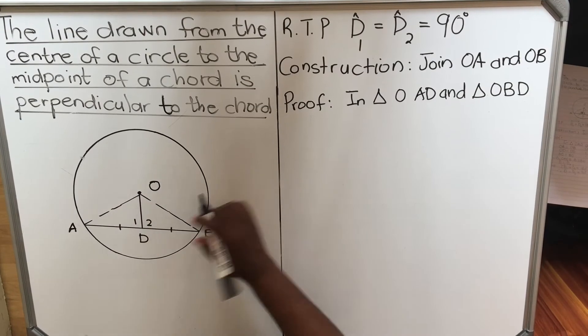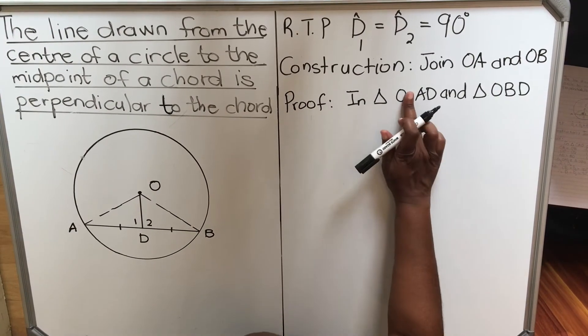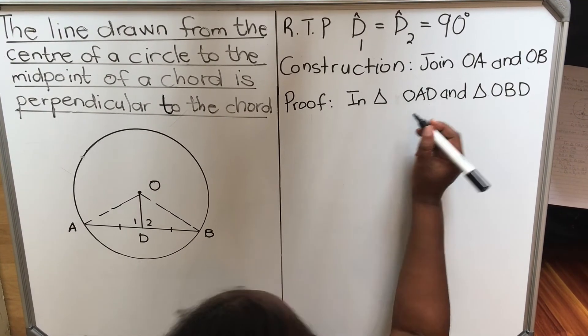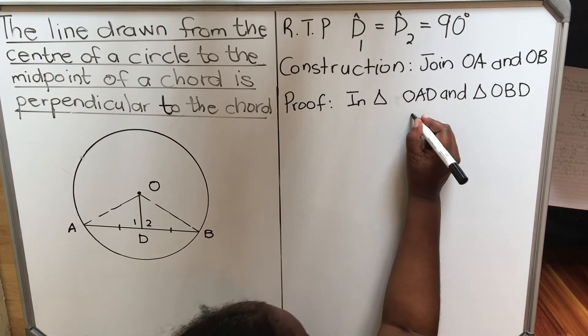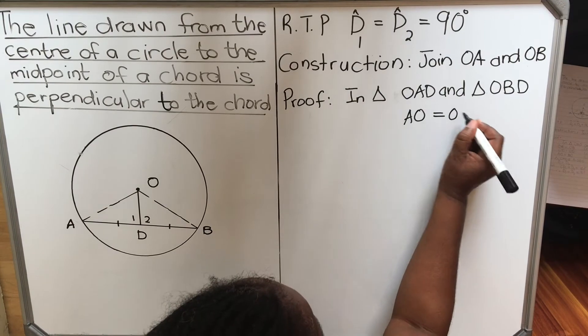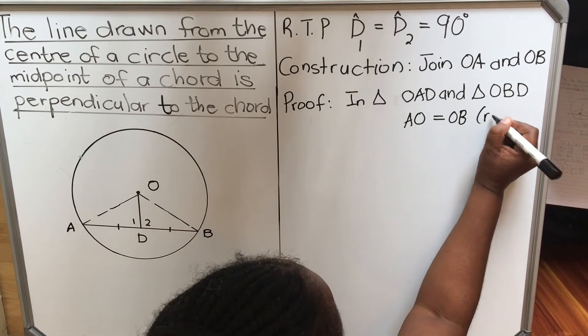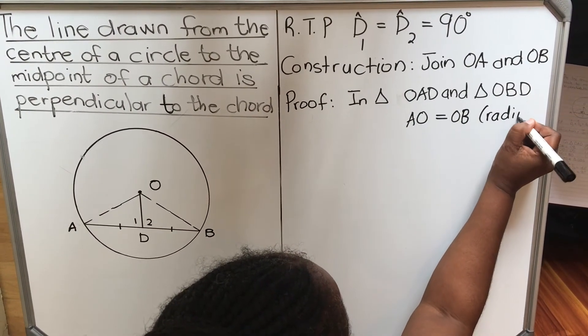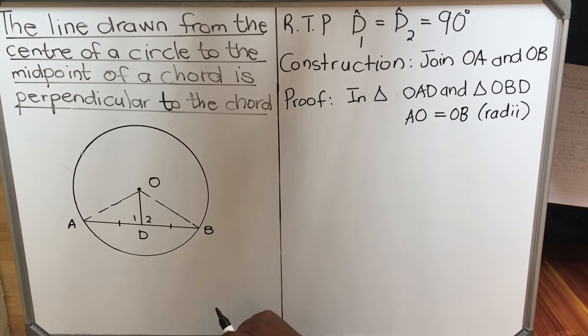In this first triangle OAD, let me put the O closer, OAD, you have this line OA is equal to OB in the other triangle. And the reason is radii, because they're both radius their lines are equal.